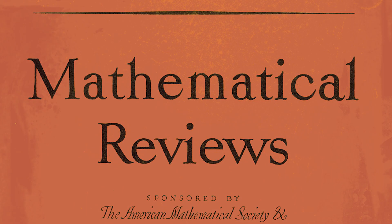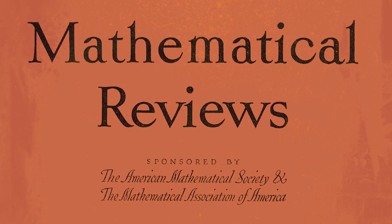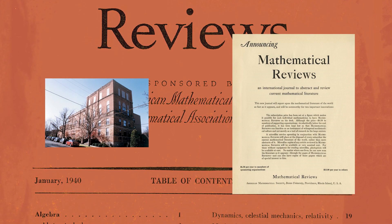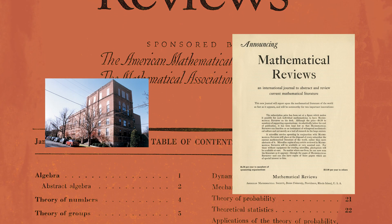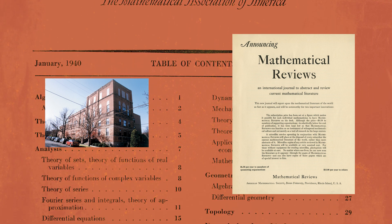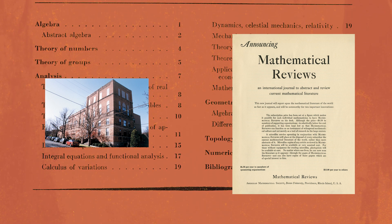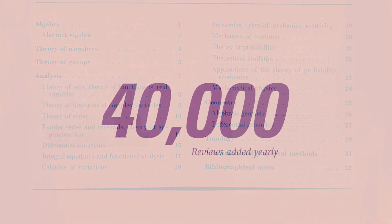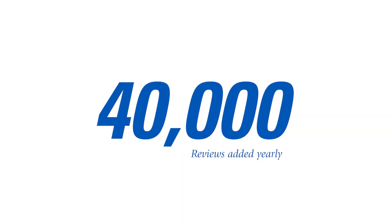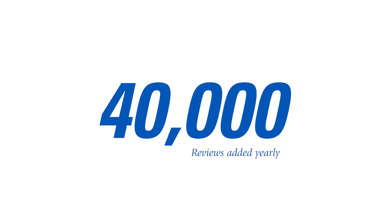Continuing in the tradition of the paper publication Mathematical Reviews, which was first published in 1940, our staff of professional mathematicians selects experts to write reviews of the current published literature. Roughly 40,000 reviews are added to the database each year.